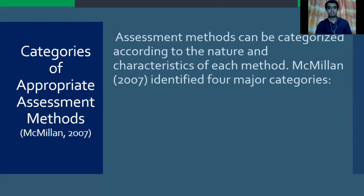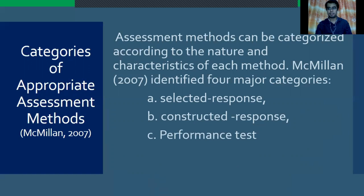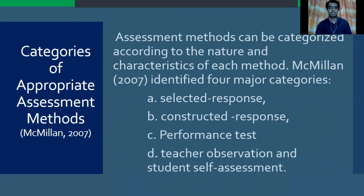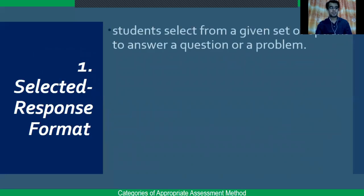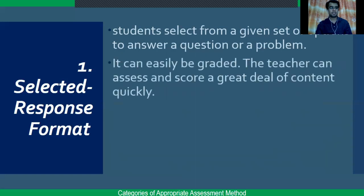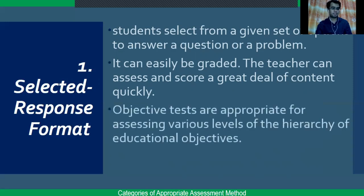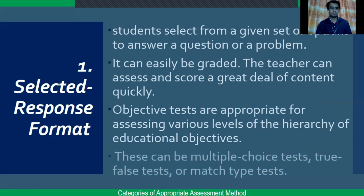Assessment methods can be categorized according to the nature and characteristics of each method. Macmillan in 2007 identified four major categories: first, selected response; second, constructed response; third, performance test; and fourth, teacher observation and student self-assessment. In selected response format, students select from a given set of options to answer a question or problem. It can be easily graded, and the teacher can assess a great deal of content quickly. This might include multiple choice, true or false, or matching type tests.